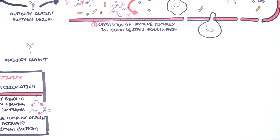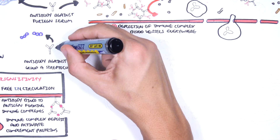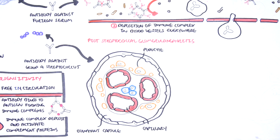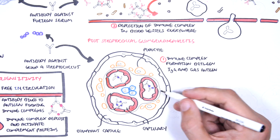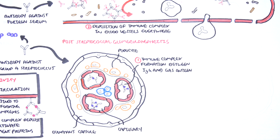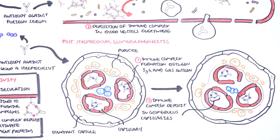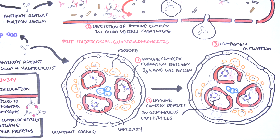Post-streptococcal glomerulonephritis is a good example of type 3 hypersensitivity. It occurs several weeks after a group A streptococcus infection such as strep throat, after which the body creates IgG antibodies against group A streptococcus. These antibodies bind to streptococcal antigens, aggregate into immune complexes, travel to the kidneys, and deposit in the glomeruli — the capillaries within the Bowman's capsule — where they fix complement, attract neutrophils, and initiate the inflammatory response.